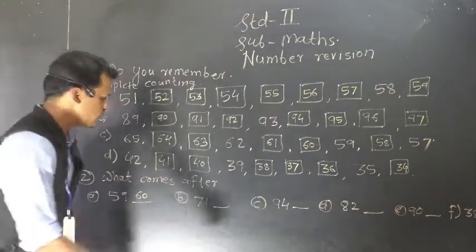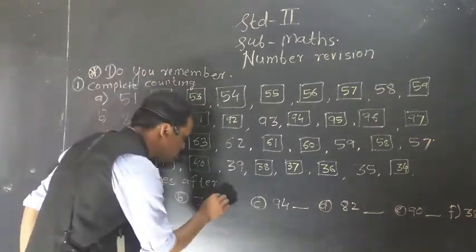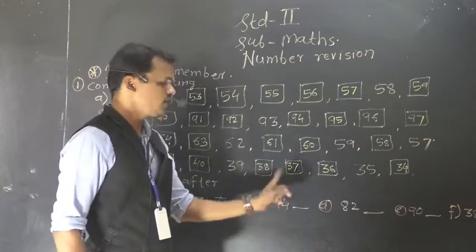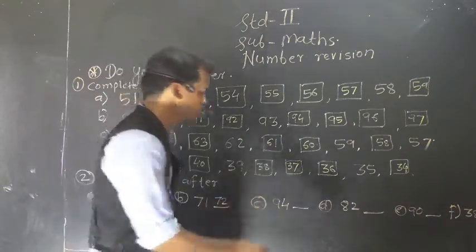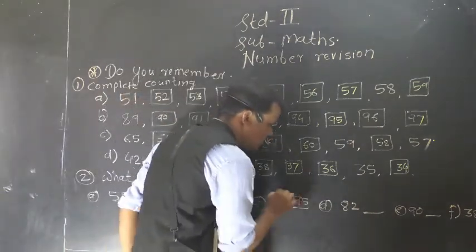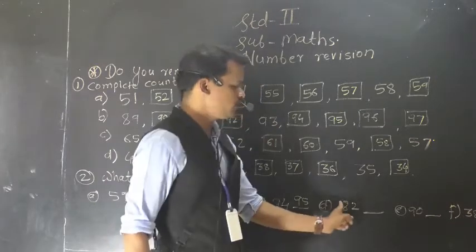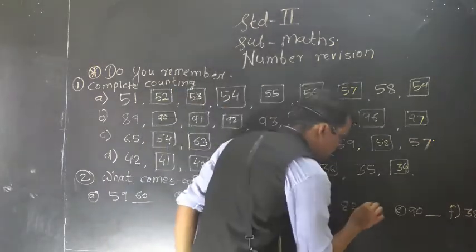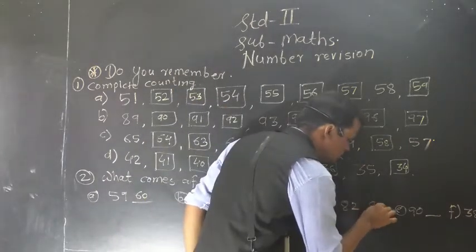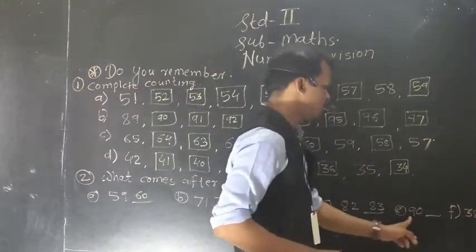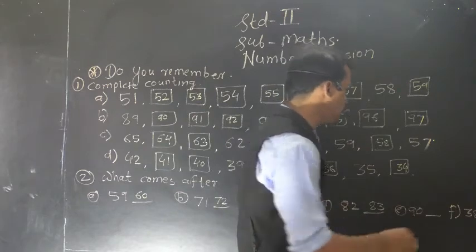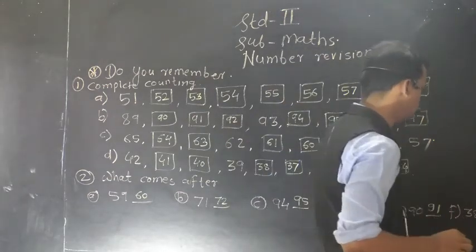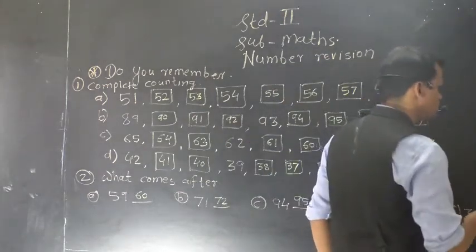After 71: 72. After 94: 95. After 85, after 82: 83. After 90: 91.